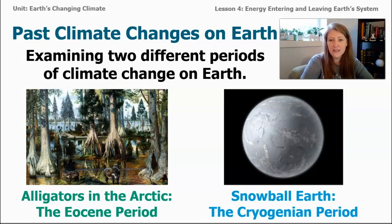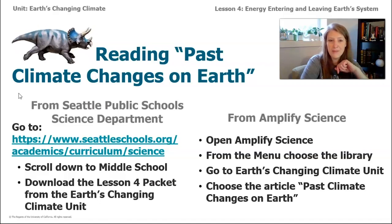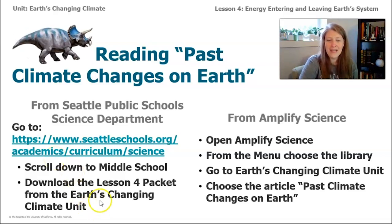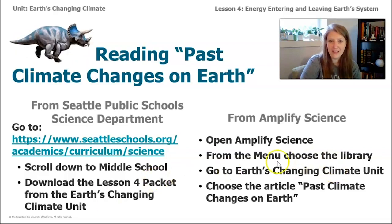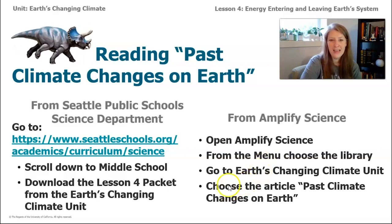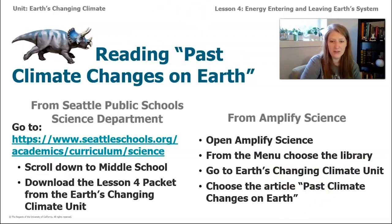To get a copy of this article, you can go to the Seattle Public Schools Science Department website at www.seattleschools.org/academics/curriculum/science. Scroll down to middle school and download the Lesson 4 packet for Earth's Changing Climate Unit — you'll find the article 'Past Climate Changes on Earth.' Or you can go to Amplify Science by logging into Clever, and instead of choosing the SIM from the menu, choose the library, then go to Earth's Changing Climate Unit and choose the article 'Past Climate Changes on Earth.'